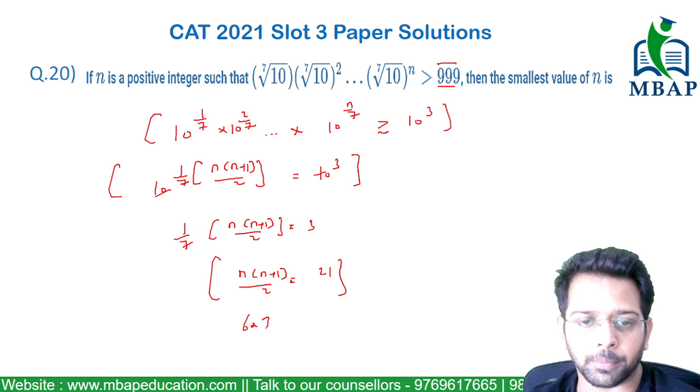Solving this, you will understand 6 into 7 by 2 will be 21. So the value of n is coming out to be 6.